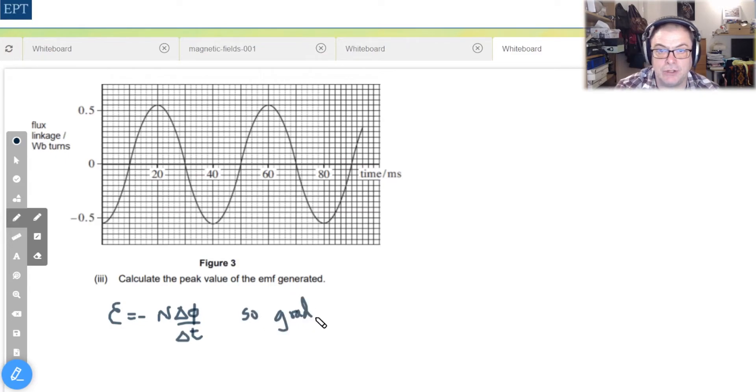In other words we need to find the gradient of the graph and since we want the peak value we need to find the maximum gradient and you could do that except it's fiddly. There must be a better way.